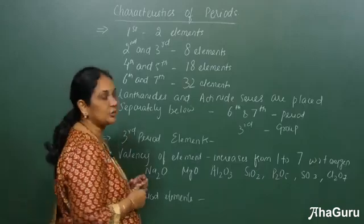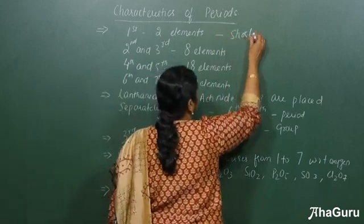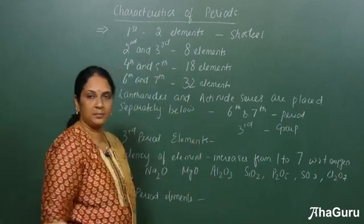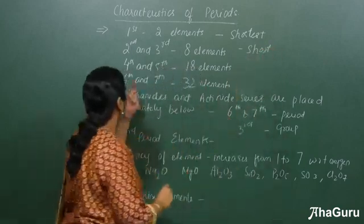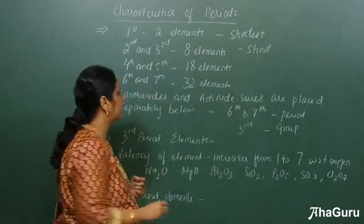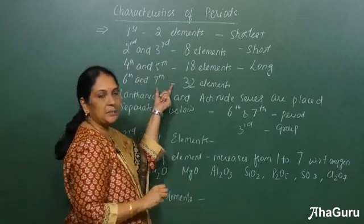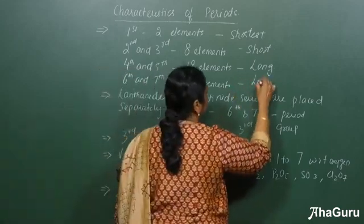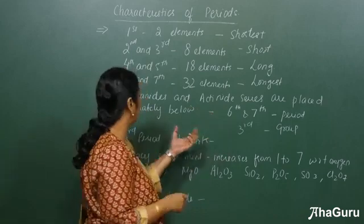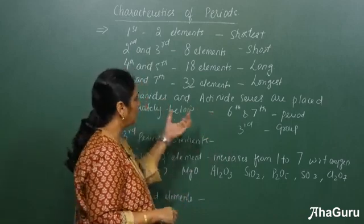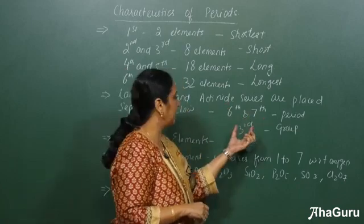The first period has two elements and is called the shortest period. The second and third periods will have eight elements each and they are called the short periods. The fourth and fifth periods will have 18 elements each and they are called the long periods. The sixth and seventh periods will have 32 elements each and they are called the longest periods. The lanthanides belong to the sixth period and group 3, whereas the actinides belong to the seventh period and group 3.